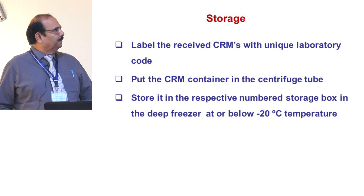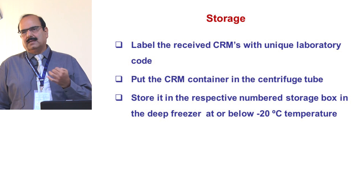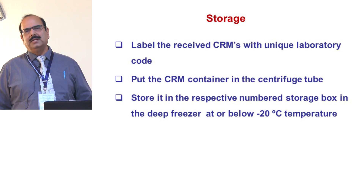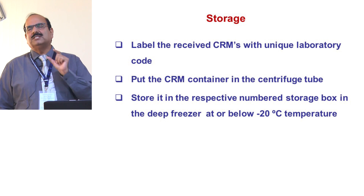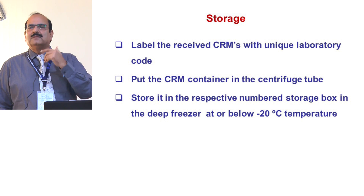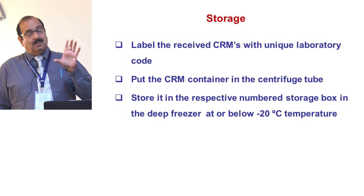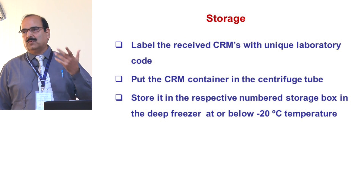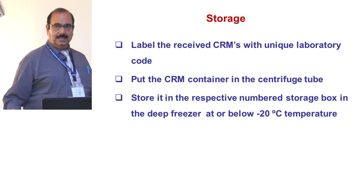For storage, label the CRM with a unique laboratory code. A testing lab may have many CRMs and one or two refrigerators. Give each bottle a unique number; when a bottle gets empty and you procure a new one, give it the same number to maintain traceability. If a new person comes to the lab, they can easily locate that particular CRM from a stock of 100, 200, 400, or 500 CRMs.